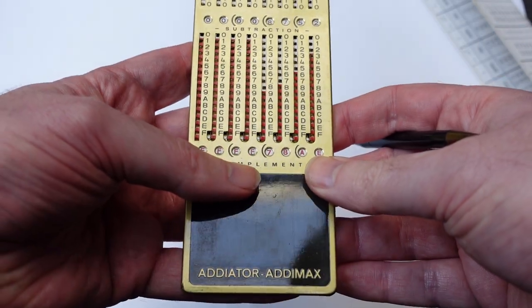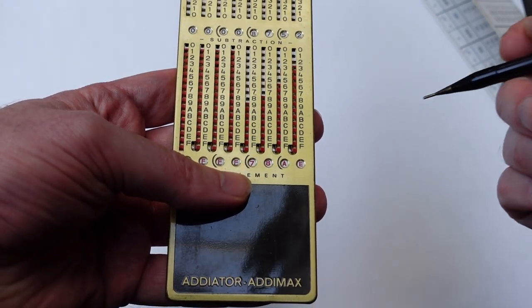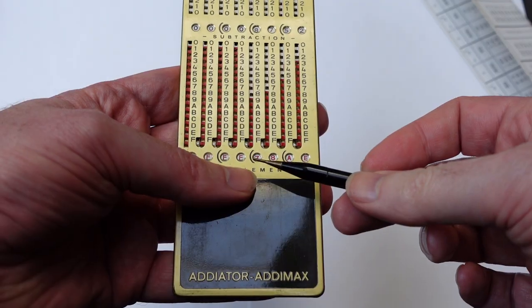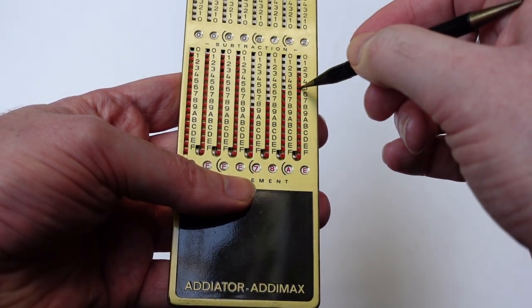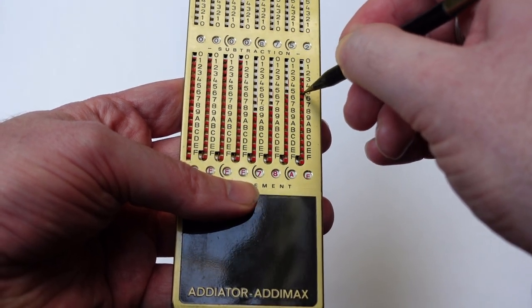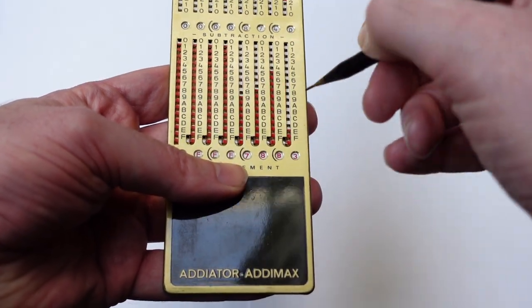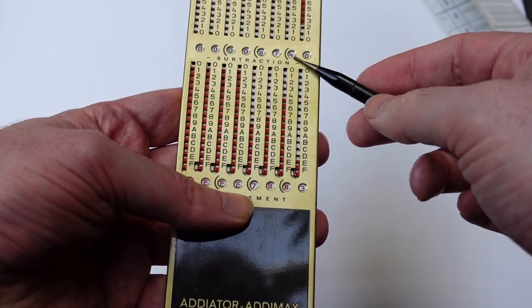To subtract, you simply use the bottom column. So to subtract 5, you go here. But again, it's in the red, so you can't go all the way up. But so you have to go around to the bottom. And that carries or reduces the next digit by one.